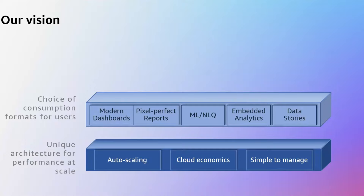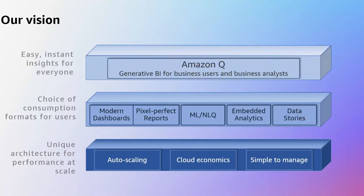Finally, data stories — a new asset we introduced recently — allow users to create narratives on top of their data and share those with stakeholders within the organization. At the top of the stack, we have Amazon Q capabilities. We've been working on Q within QuickSight for a long time, broadening the range of users who can interact with different workloads by making it super easy to use natural language while interacting with QuickSight.